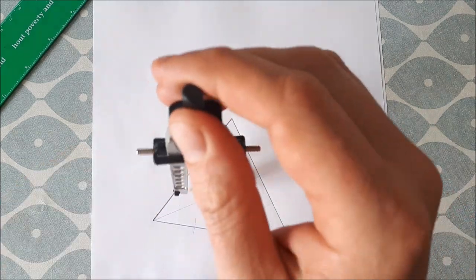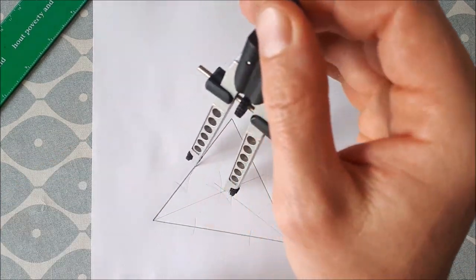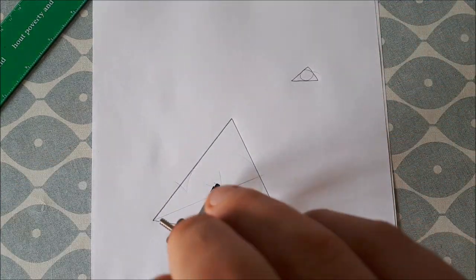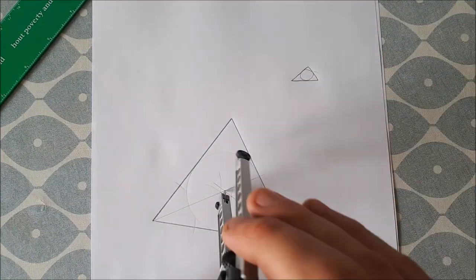So now we have a tangent to the circle, and if we've done it right and we draw this circle, it should be a tangent to all three sides.